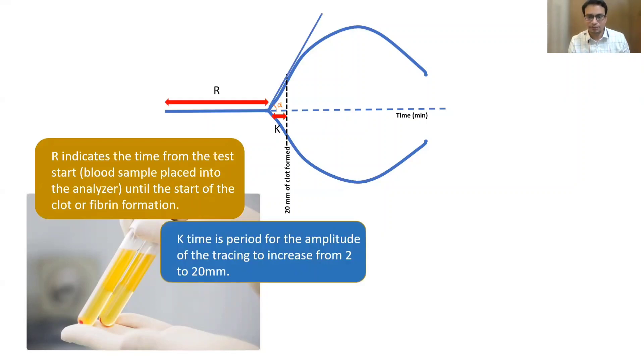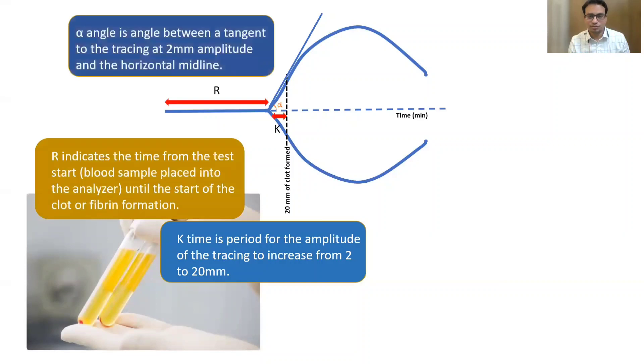Then comes the alpha angle. Alpha angle is the angle between a tangent to the tracing at two millimeter amplitude and the horizontal midline. So both the K time and the angle measure the speed of clot formation, the clot kinetics.